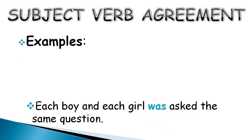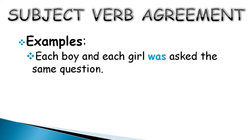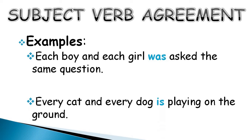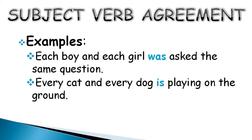Have a look at these examples. Each boy and each girl was asked the same question. Boy and girl are two different nouns but they are clubbed with each, and hence you use was, which is a singular verb. Every cat and every dog is playing on the ground. Cat and dog are two nouns but they are associated with every, and hence we are using the singular verb is.